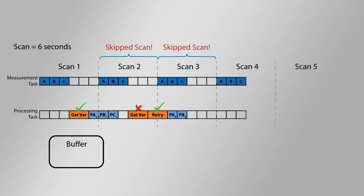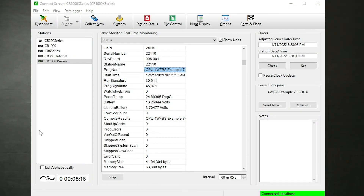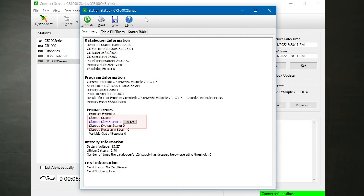The measurement and processing tasks are synchronized and restarted. Make three measurements A, B, and C and hold them in the buffer. The get variables instruction runs and is successful. The processing task begins working through the buffer. Precisely one scan interval after the previous measurements were taken, they are taken again. Simultaneously, additional processing left in the buffer takes place. If you see your skipped scans increase by the same number regularly when viewing the station status, you are likely experiencing this. To eliminate skipped scans, you can increase the number of scan buffers, increase the scan rate, or change the structure of your program. The Campbell Scientific website has several articles on skipped scans and how to prevent them — links to several of these articles are found in the description of this video. In pipeline mode, the data logger uses a minimum of two buffers; the previous example used just one for demonstration purposes.